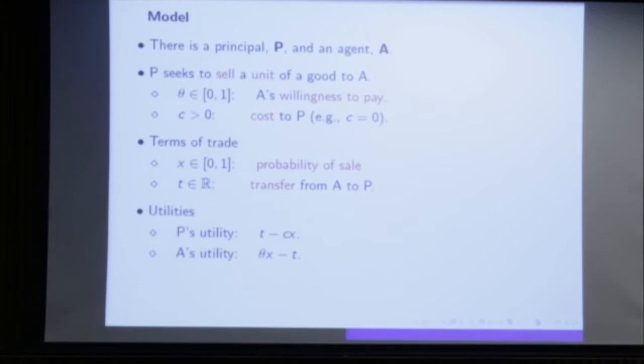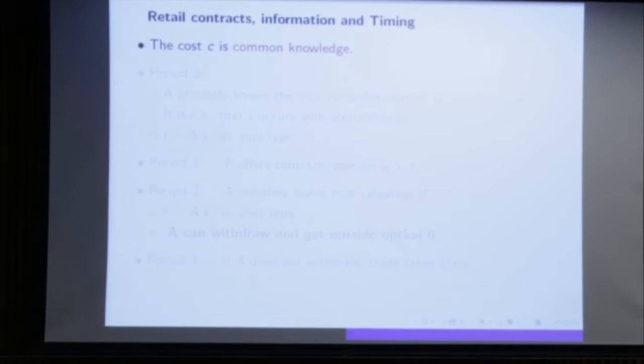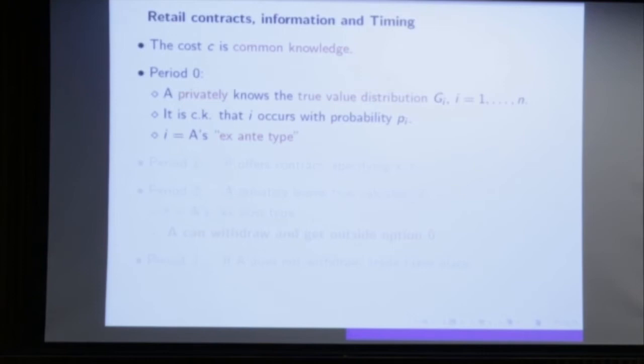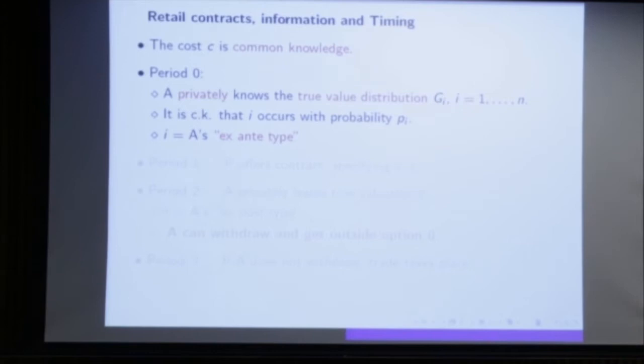The information structure: cost C is common knowledge. In period zero, before the contract is written, the agent does not yet learn theta. He learns that his true valuation theta will be drawn from distribution G_i, and it is common knowledge that type i occurs with probability p_i. So I — what type I am as an agent — is already some private information: I know something more than the principal about how much I will need my jeans.